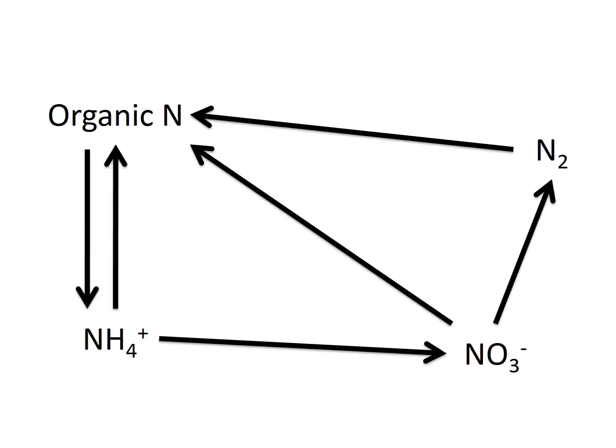Today we're going to talk about denitrification, which continues with the nitrogen cycle. In general, the nitrogen cycle involves fixation and organic material uptake. When you add plant litter into the soil, you have nitrogen in the form of organic nitrogen. It can be transferred by microbial processes into ammonium ion (NH₄⁺) in a process called mineralization. Then nitrification takes place, where ions such as nitrite and nitrate (NO₃⁻) are formed.